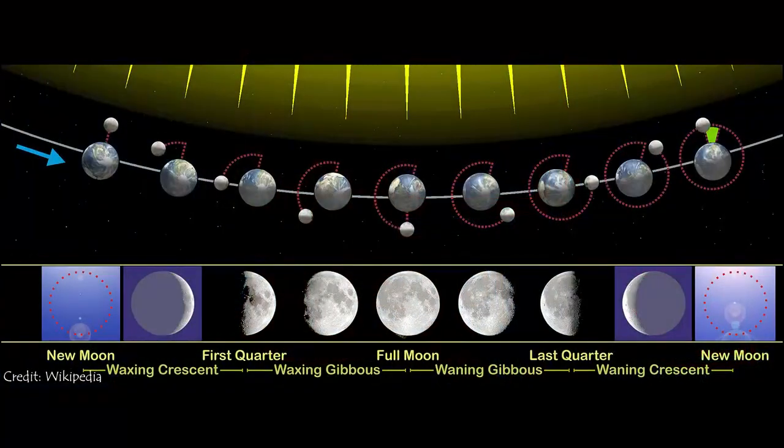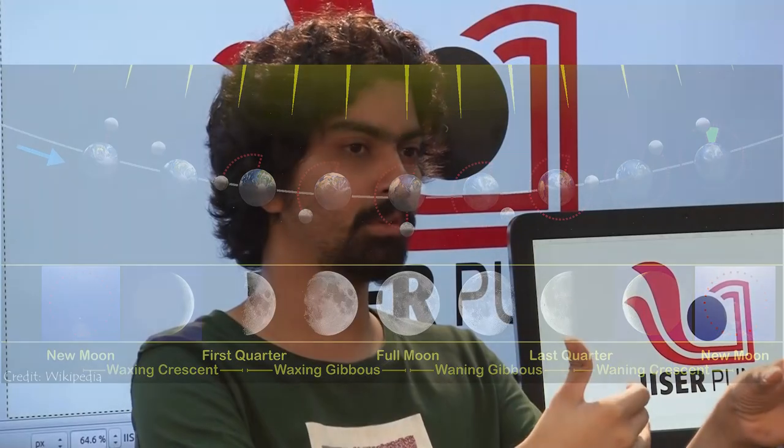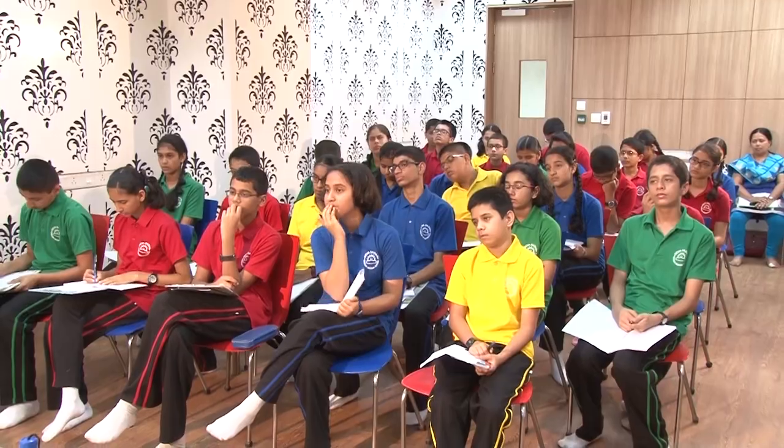Why do we see the phases of the moon? The easy way to understand this is that the phases are basically due to the arrangement between the Earth, Moon, and Sun. Depending on where the Sun is with respect to the Earth and Moon, different portions of the Moon are illuminated in different amounts. As the month goes by, we see the Moon go from being only partially illuminated to fully illuminated to not illuminated at all.